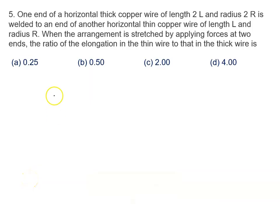One end of a horizontal thick copper wire of length 2L and radius 2R. There is a copper wire. Length is given to us, that is 2L, and radius is given to us, that is 2R.